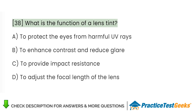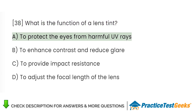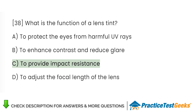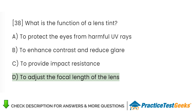What is the function of a lens tint? A. To protect the eyes from harmful UV rays. B. To enhance contrast and reduce glare. C. To provide impact resistance. D. To adjust the focal length of the lens.